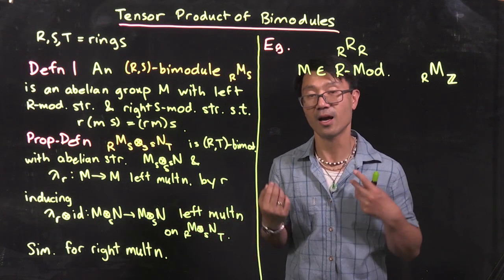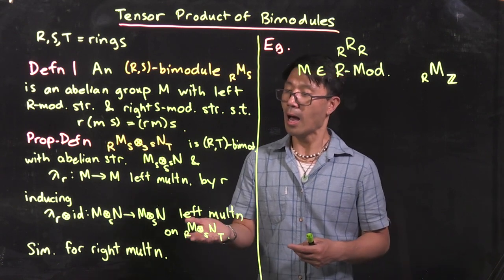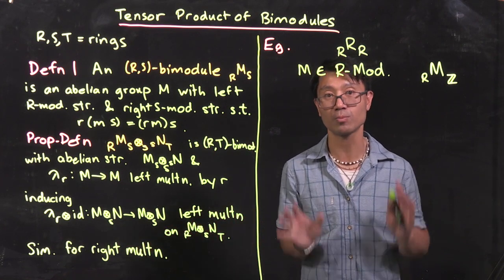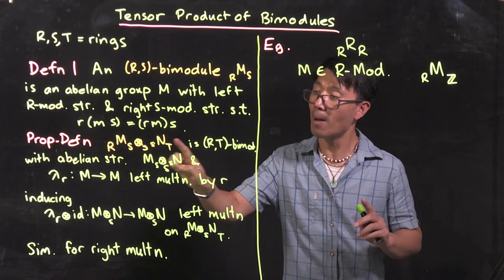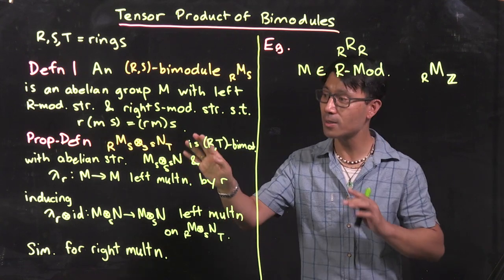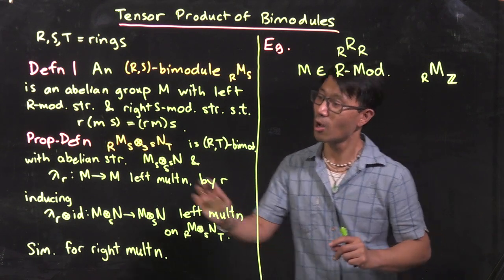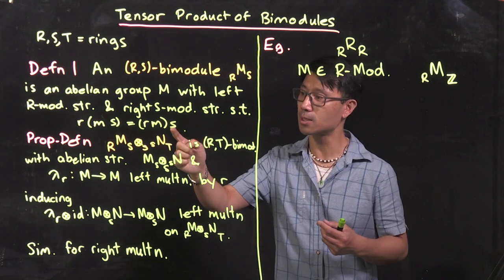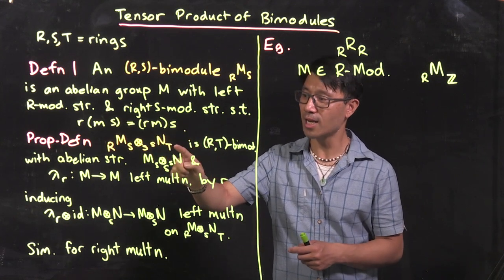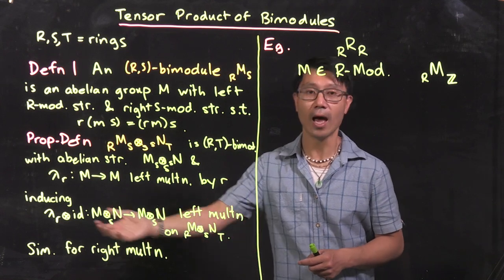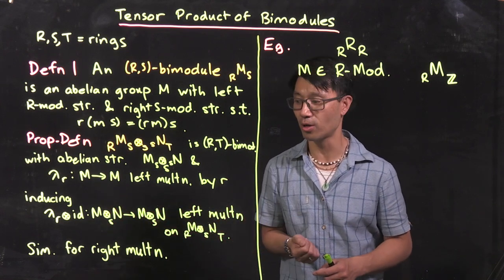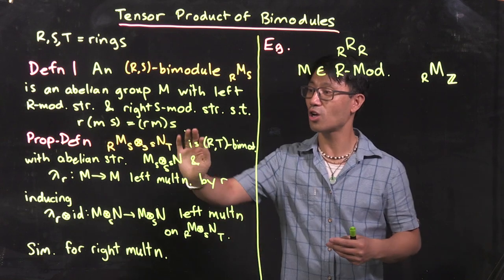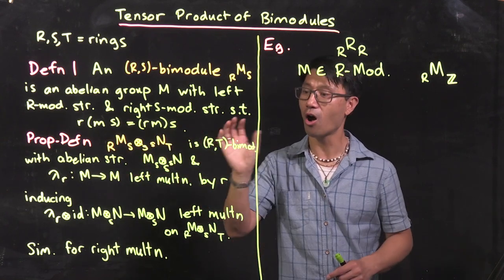For the right T multiplication: you right multiply on N by elements of T, which gives a map from N to N. Using functoriality, this induces a map on the tensor product. It's an exercise to go through the definitions and show that this actually gives an R,T-bimodule structure on M ⊗_S N.